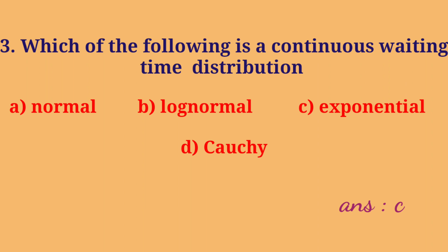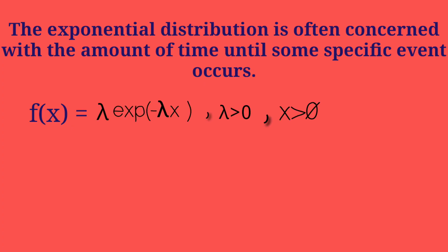Exponential is an important distribution with the Lack of Memory Property. For exponential distribution, f of X equals lambda e raised to minus lambda X, where lambda is greater than 0 and X is greater than 0.